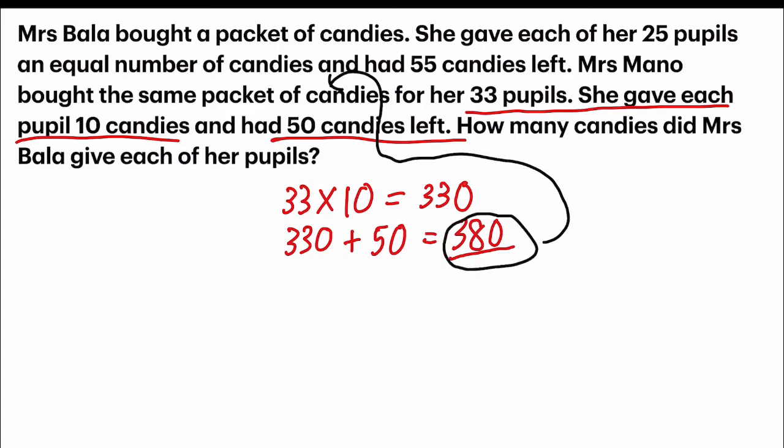How many candies did Mrs. Bala give each of her pupils? We need to focus on that part of the question. She has 25 pupils and gave each an equal number of candies. She had 55 candies left.